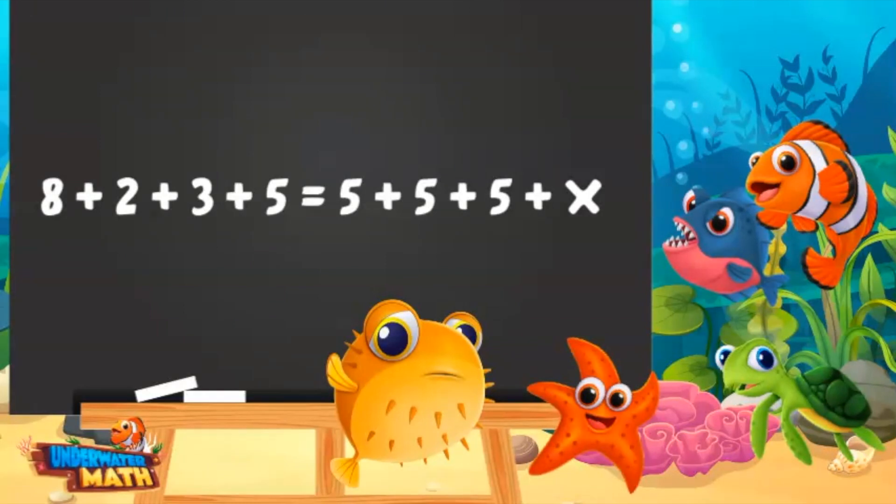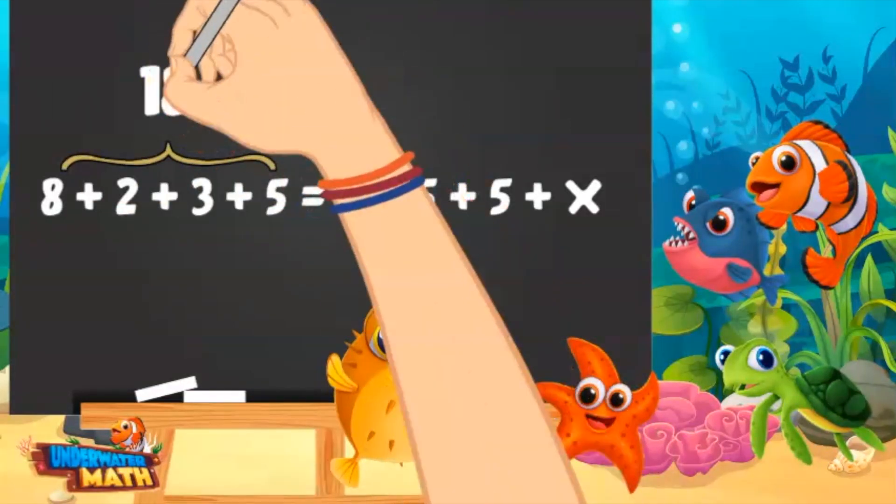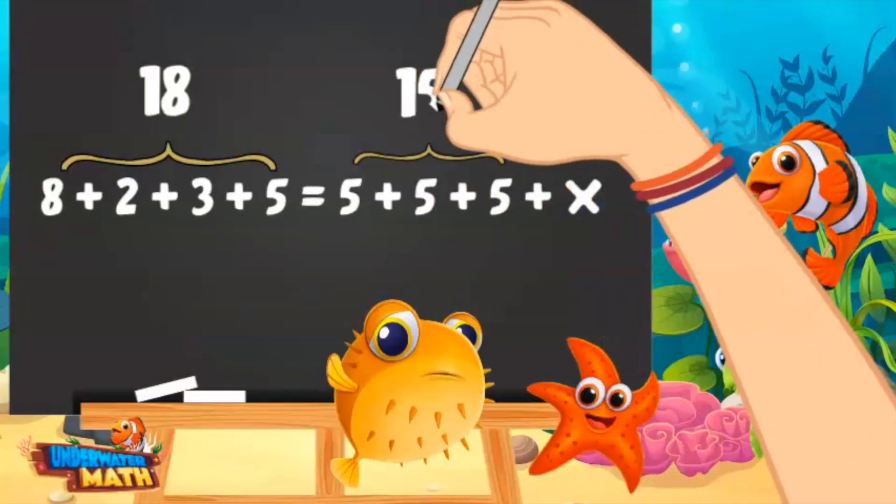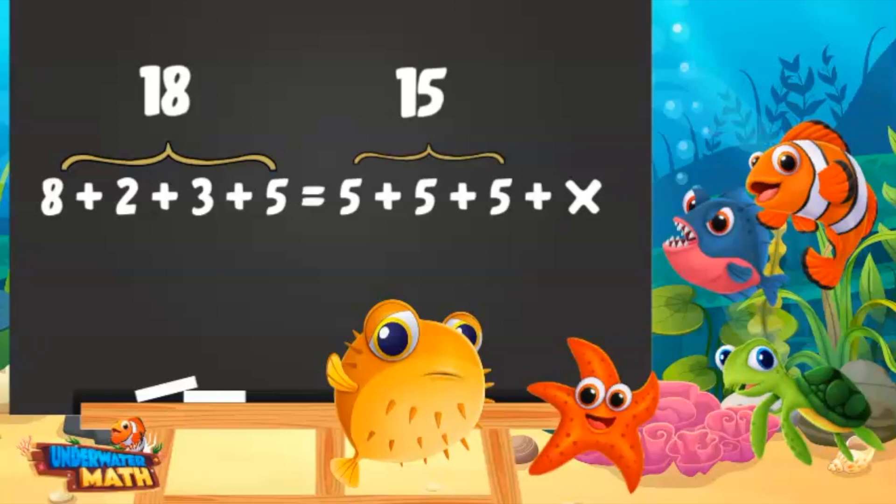Last one. What if we have 8 plus 2 plus 3 plus 5 equals 5 plus 5 plus 5 plus x? What does x equal? The right side equals 18, so we have to make the left side equal. 5 plus 5 plus 5 equals 15.